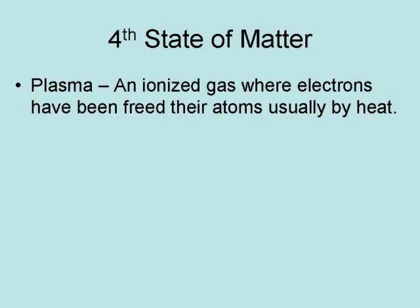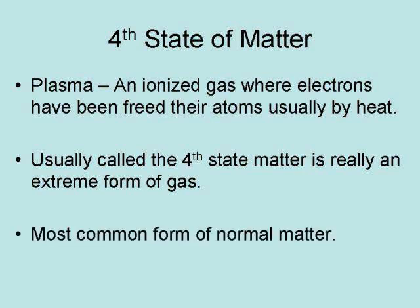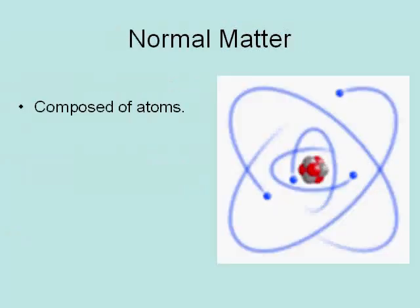Plasma is an ionized gas where the electrons have been freed from their atoms, usually by heat. Plasma is usually called the fourth state of matter, but it is really an extreme form of gas — it has all of the defining characteristics of a gas: no definite volume and no definite shape. Plasma is the most common form of matter in the universe.